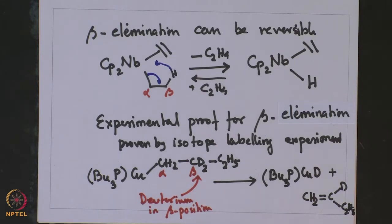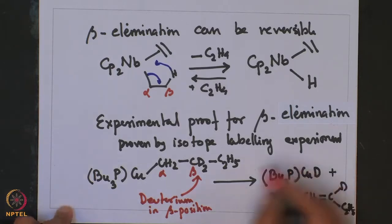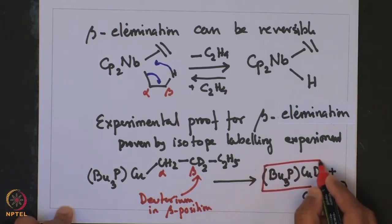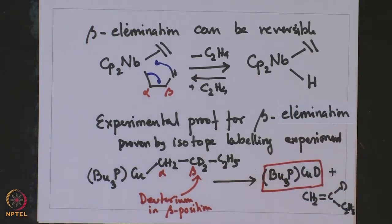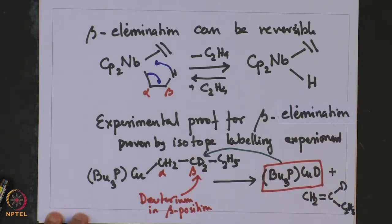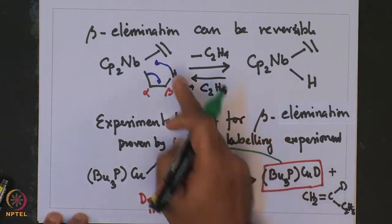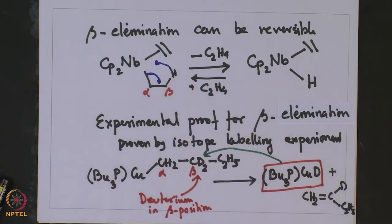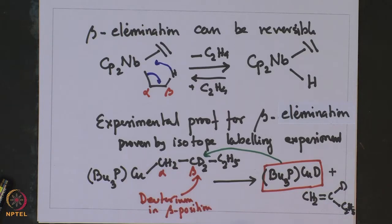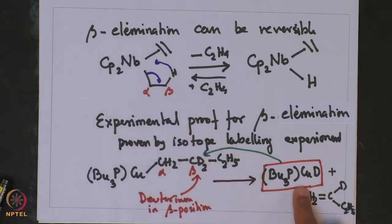The formation of the copper-deuterium complex convincingly proved that elimination occurred from the beta position. This was a convincing proof which established the fact that in the beta elimination reaction, the hydrogen is evolved from the beta position. There was no formation of copper hydride, which would have resulted from alpha elimination. Hence the name beta elimination was derived for this reason.